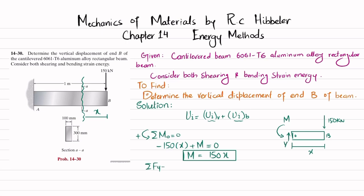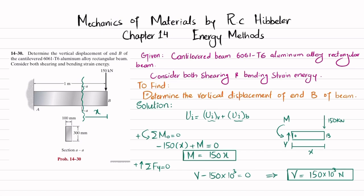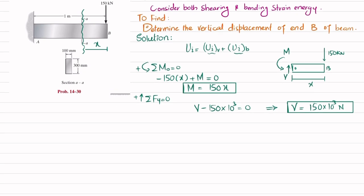For the shear force, using sum of forces in the y-direction equal to zero, with upward forces positive: V − 150×10³ = 0, giving shear force V = 150×10³ newtons. Now we have both the moment M = 150x and shear force V = 150×10³ N.